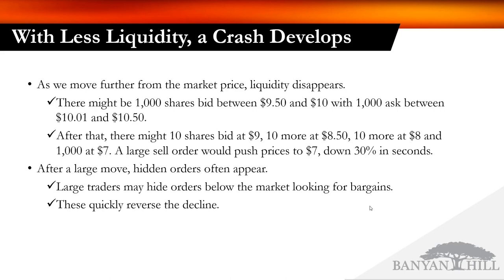After the large move, all kinds of hidden orders appear. Market makers, high-frequency trading firms, and institutional investors hide their orders — they'll put in different order formats showing 10 shares, but they're actually looking for 10,000. These orders then quickly reverse the decline. So that's all a crash is: liquidity dries up, something happens and the order book empties out, and then all of these hidden orders come into play and it's quickly reversed.